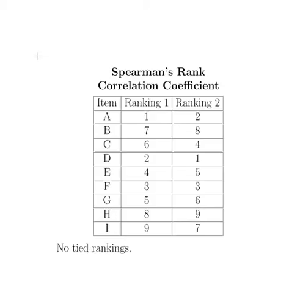What we're going to do is consider the strength of association between ranking one and ranking two. If there's a high degree of association, low values in ranking one will be associated with low values in ranking two, and conversely, high rankings in ranking one will be associated with high rankings in ranking two. Importantly, there are no tied rankings in this presentation.